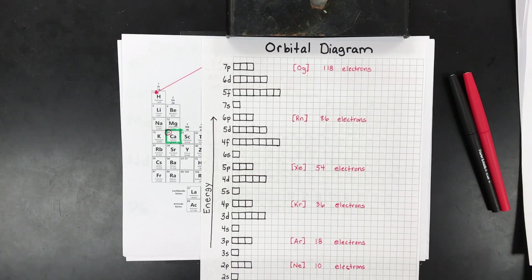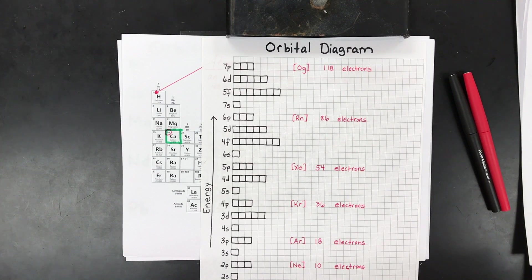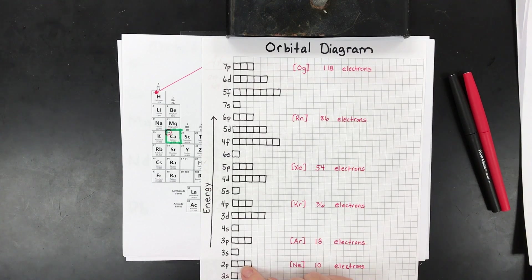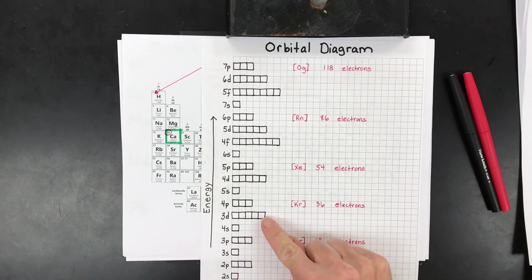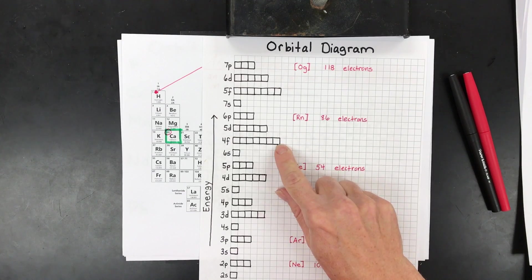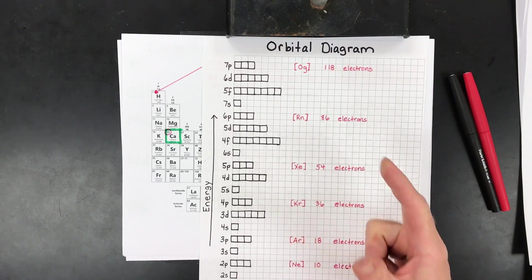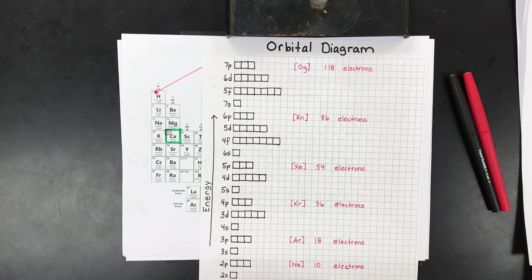Remember each box can hold two electrons. So a p orbital can hold up to six electrons, a d can hold ten, and an f can hold up to fourteen. If there were g orbitals, you would be able to have eighteen.